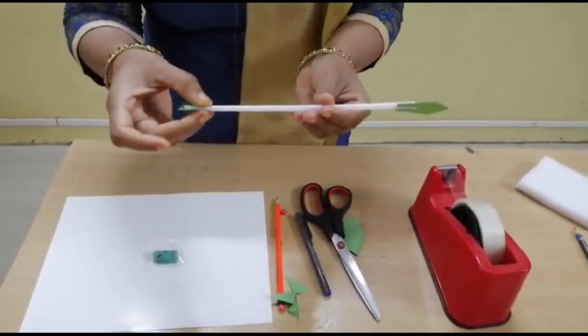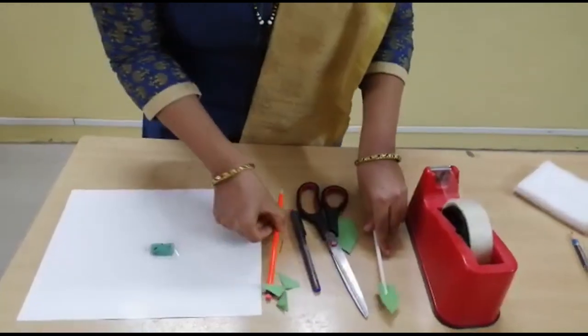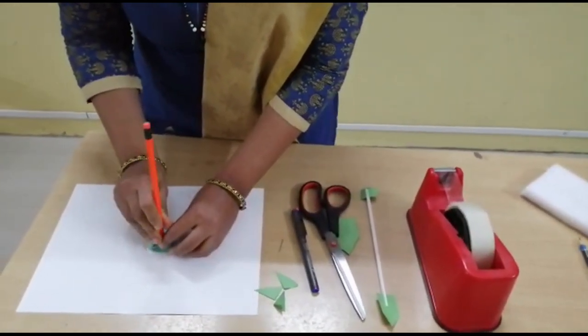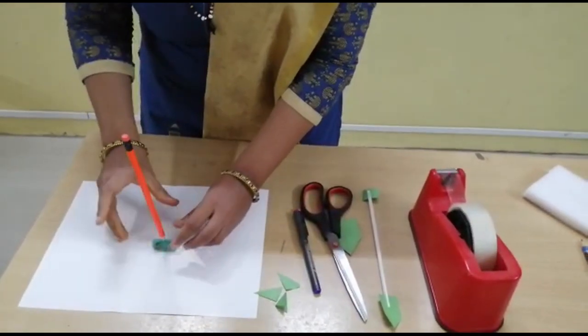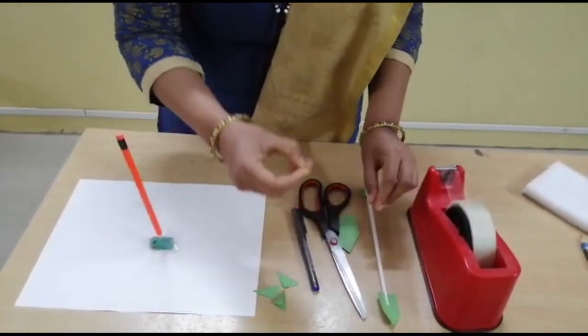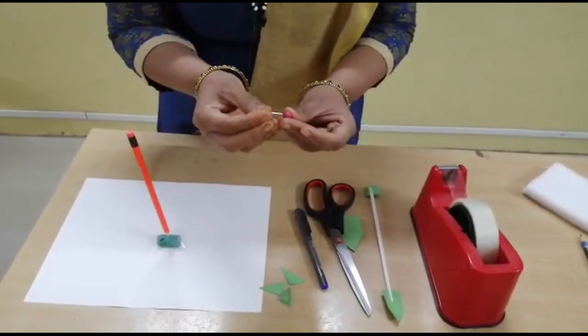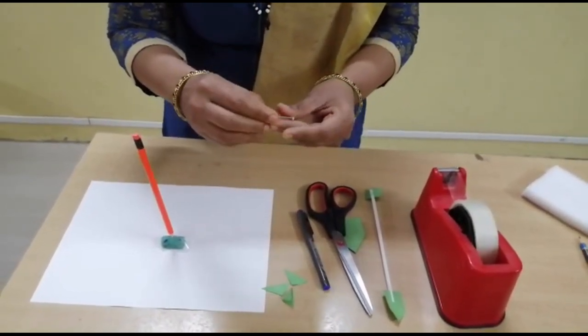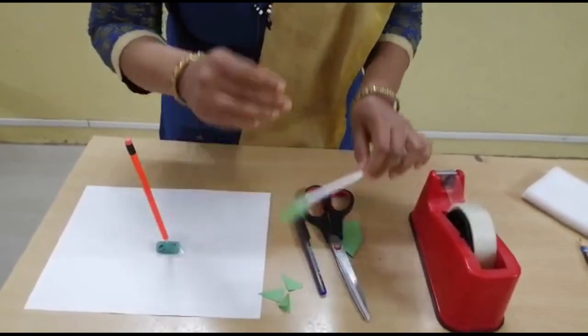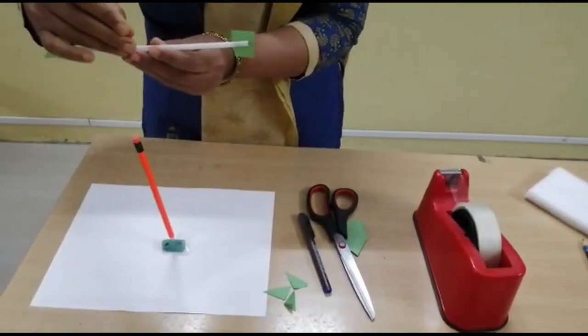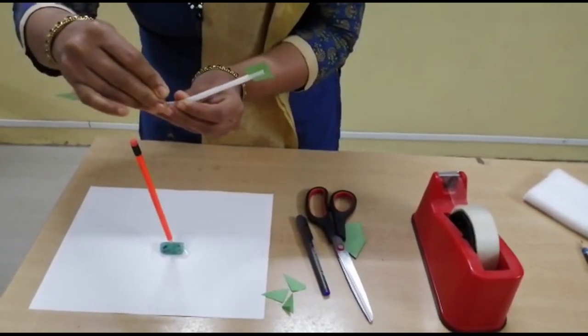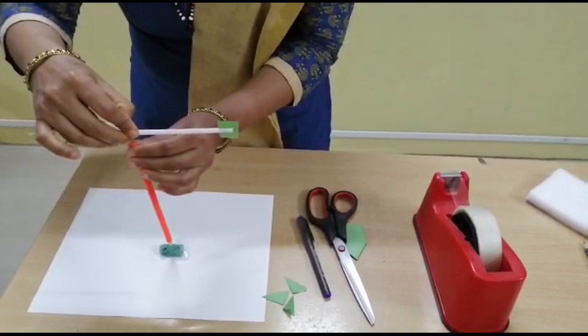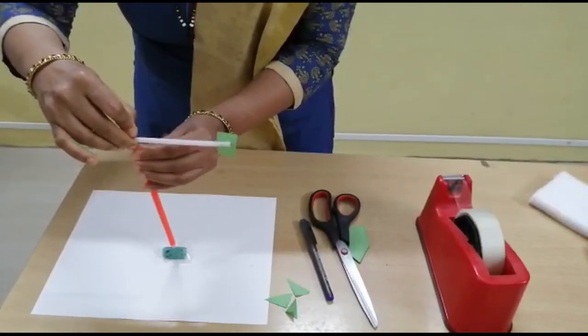Now take the pencil and insert it in the eraser which is fixed on the hard paper. With the help of a paper pin and the thermocol bowl, first you insert the paper pin in thermocol bowl, and then insert both the straw in the eraser of the pencil.